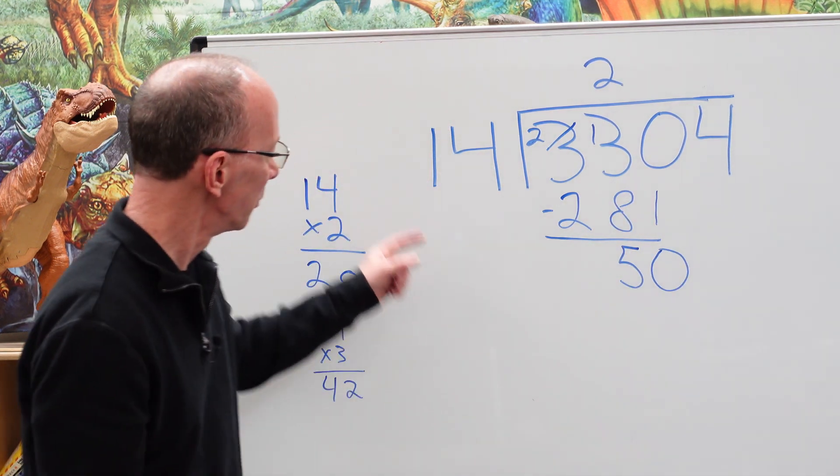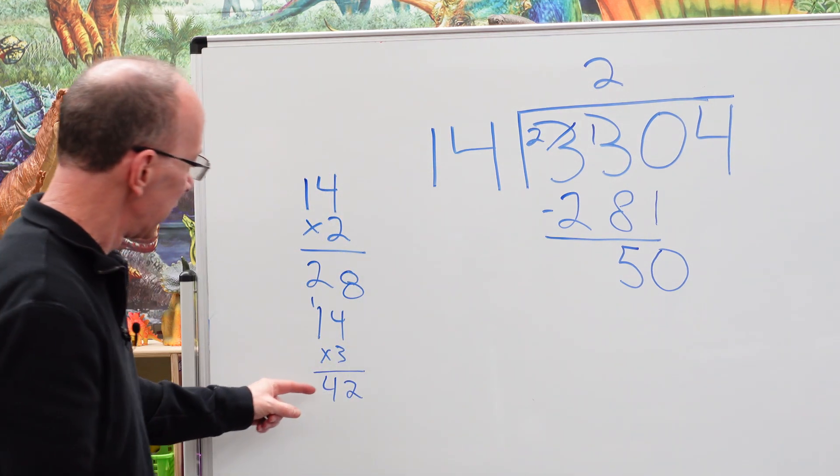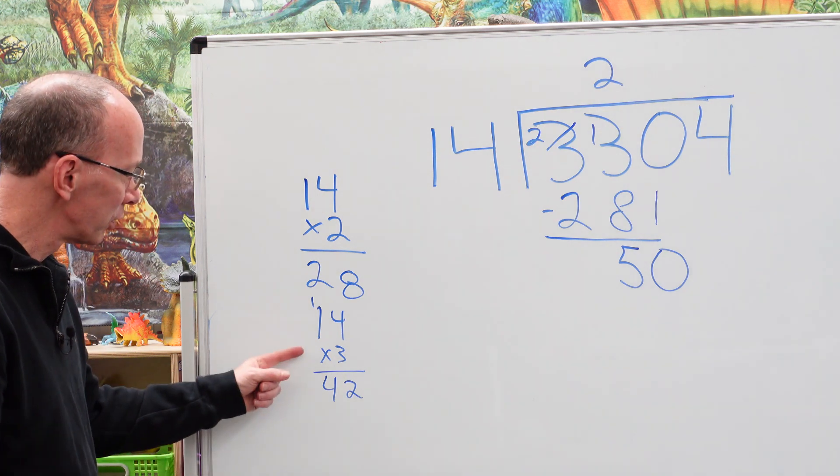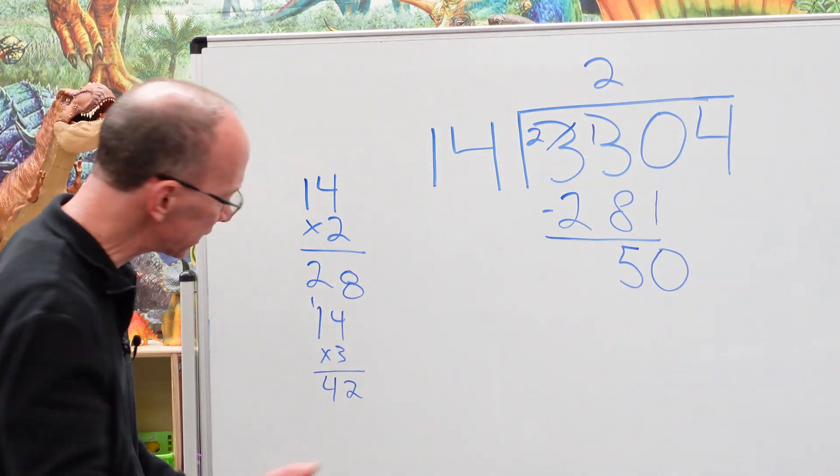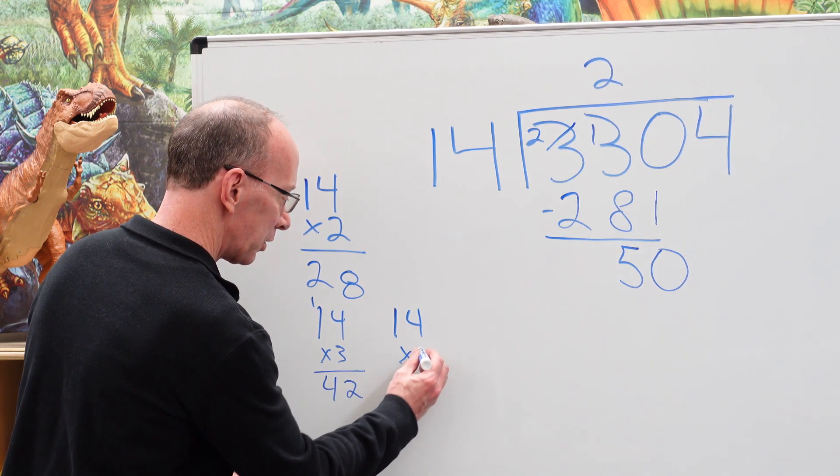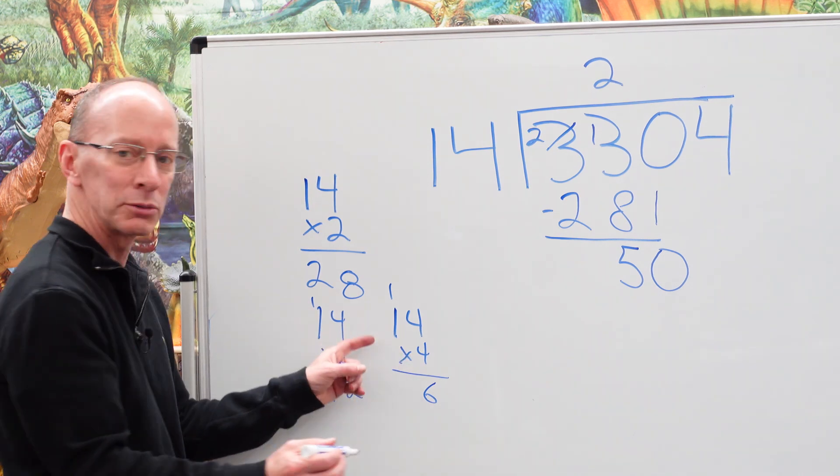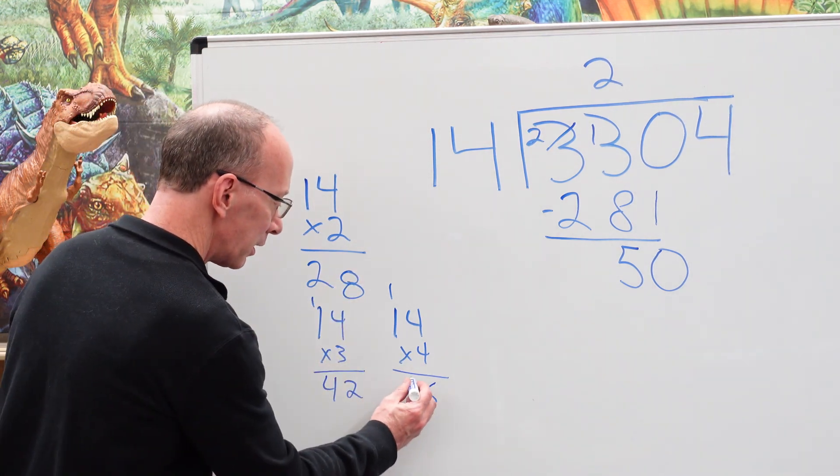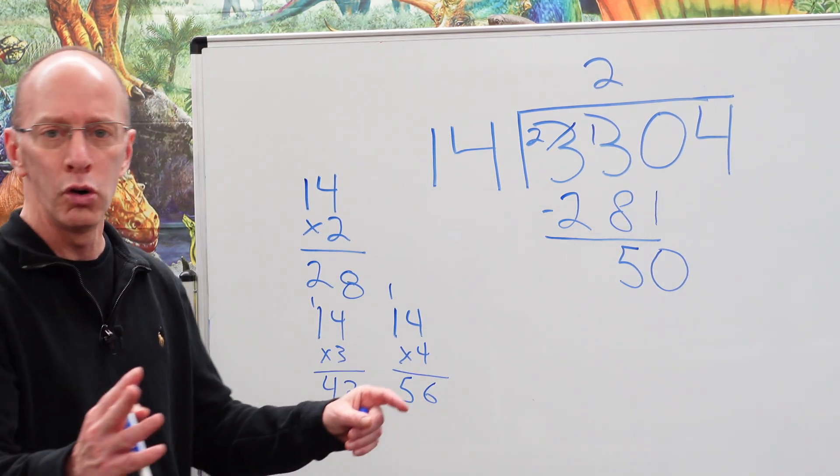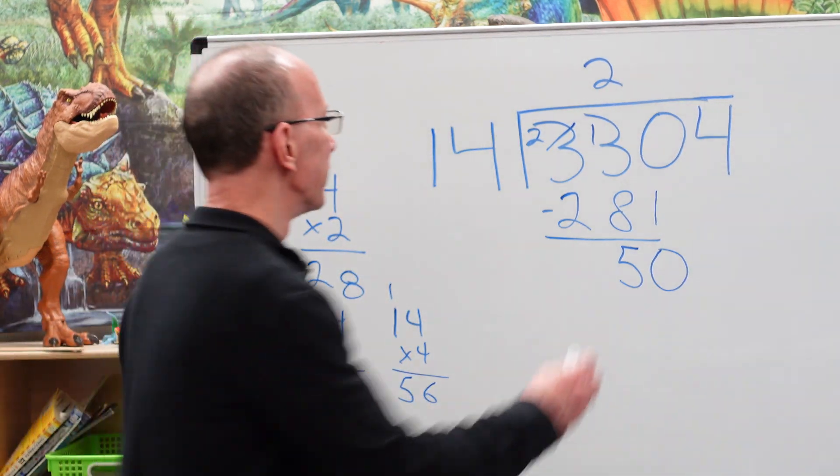So now we have to start all over. How many times can I put 14 into 50? I got this number here. 14 times 3 is 42. Can I get a little closer? Let's see. I don't think so but I just kind of want to show you. So 4 times 4 is 16. Carry that 1. 4 times 1 is 4 plus the 1. 56. Too high. Oh my goodness gracious.